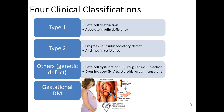Poorly controlled blood glucose in mothers over the course of pregnancy can cause macrosomic babies, defined as a baby weighing more than nine pounds, shoulder dystocia, and stillbirth. Fifty percent of mothers with diabetes will require insulin. Oral agents are contraindicated in gestational diabetes.